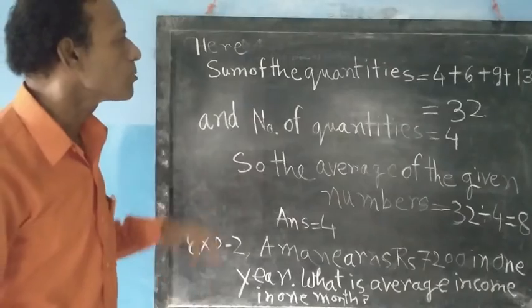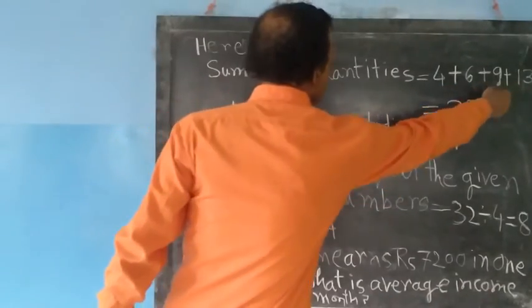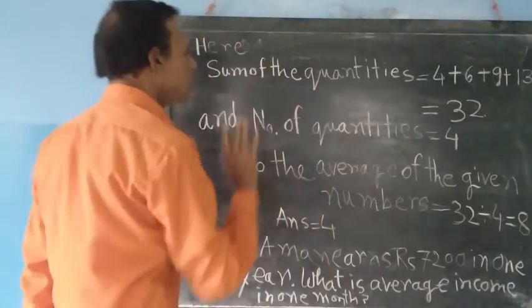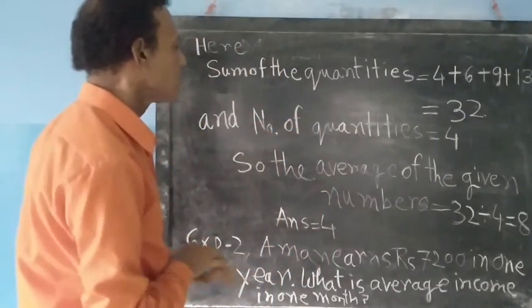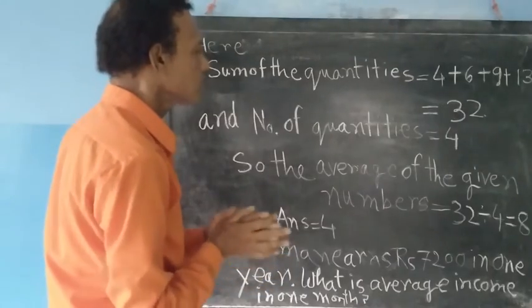And the number of quantities is 4. Therefore, the average is 32 divided by 4, which equals 8.